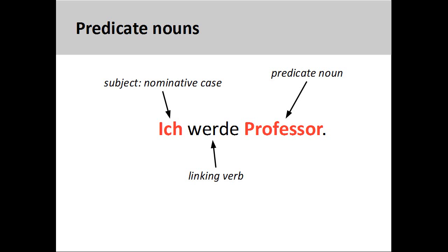Finally, it is important to note that other verbs besides forms of 'sein' — to be — can also function as a linking verb. In this sentence, 'ich werde Professor' — I become a Professor — the verb 'werde' simply reports on the subject's change of being. Since no real action is described in the sentence, both subject and predicate are in the nominative case.